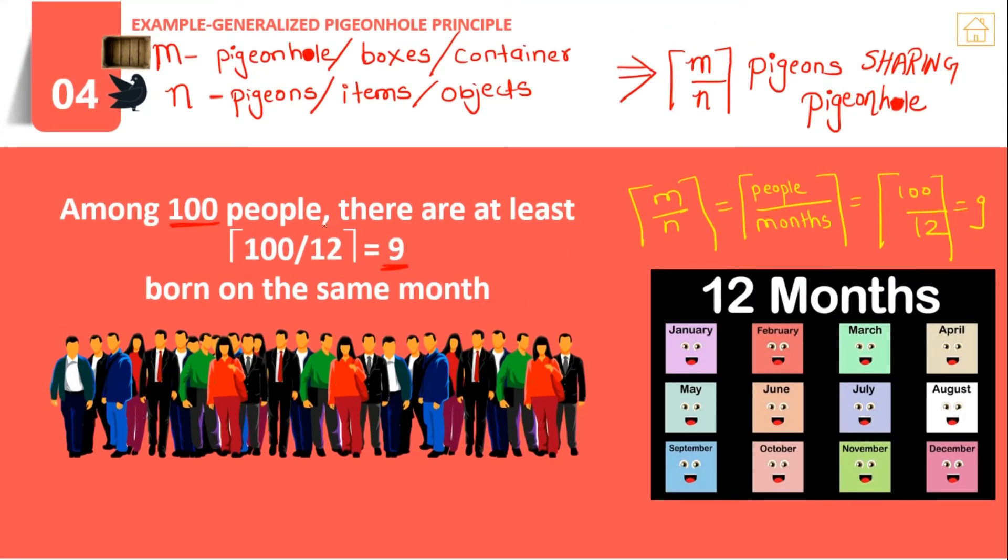For example, among 100 people (here 100 people are my pigeons), how many people were born in the same month? Here the month is my pigeonhole, all the possibilities for my solution. There are only 12 months in a year, so there must be 100 divided by 12 people sharing their birthday in the same month. That's 100/12 = 9, meaning at least 9 people among the 100 have their birth month as the same month.